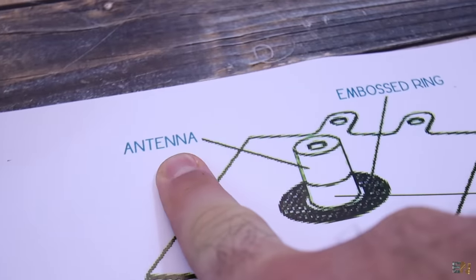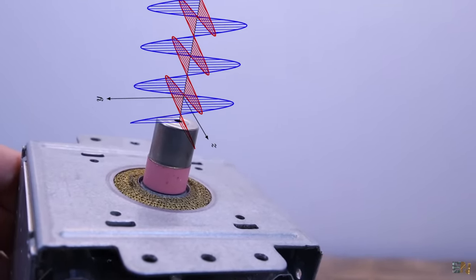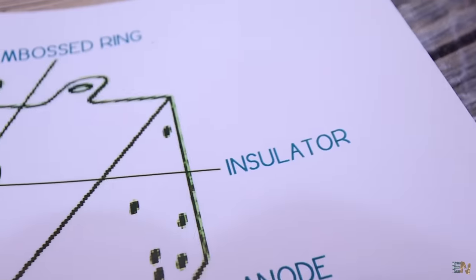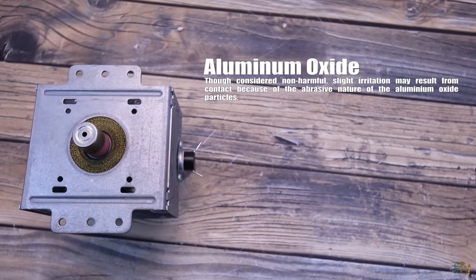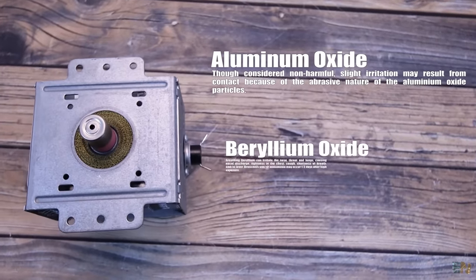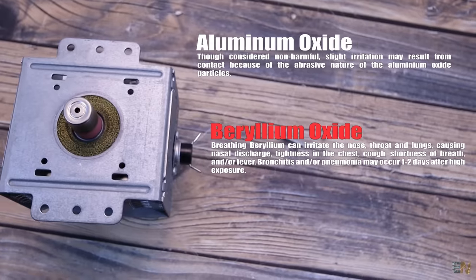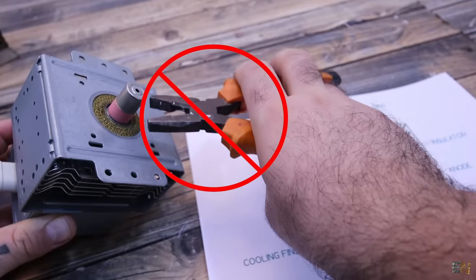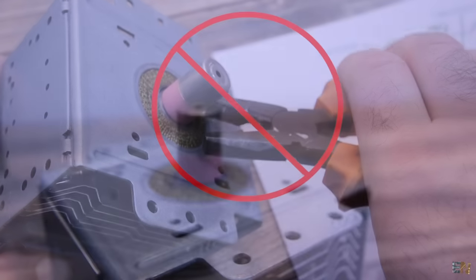These are the main parts that make such a component. We start with the RF output antenna. So this is where the microwaves are coming out. Then we have this pink insulator. This could contain aluminum oxide which is safe. But it could also contain beryllium oxide which is very, very dangerous if inhaled. So under no condition you should break this ceramic insulator and create dust from it. So stay far from this.